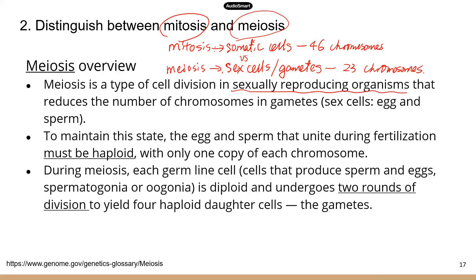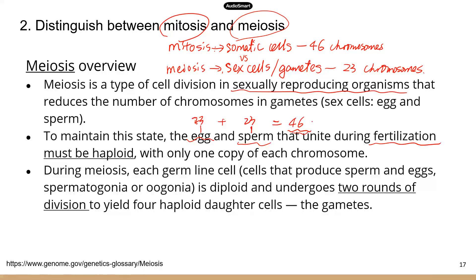Only sexually reproducing organisms have meiosis. The reason is that in sexual reproduction, you have a process called fertilization — that's when an egg and a sperm cell unite and all their genetic material is fused into one cell. That means each sex cell can only carry half the number of chromosomes. So each egg will have 23 chromosomes and sperm the same — 23. When they unite, the new cell has 46 chromosomes, which is the unique number for humans and the number found in somatic cells.